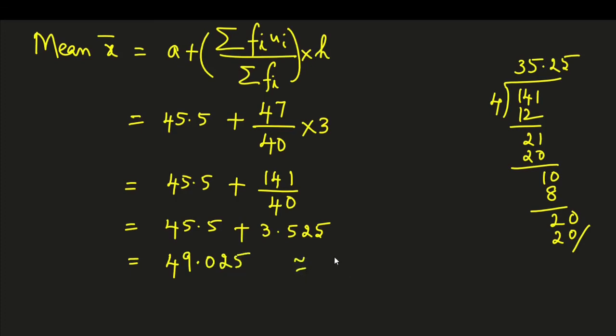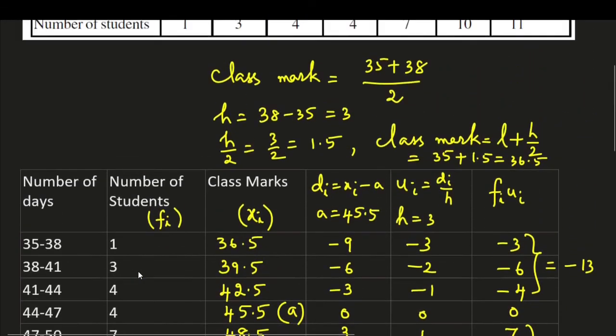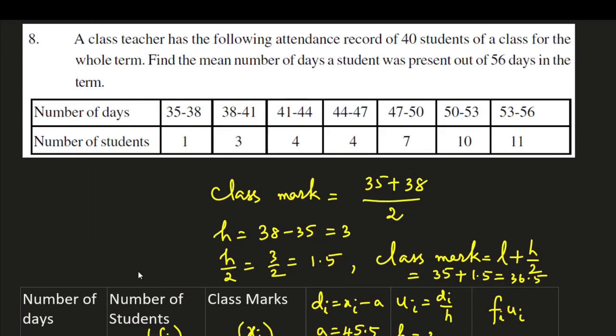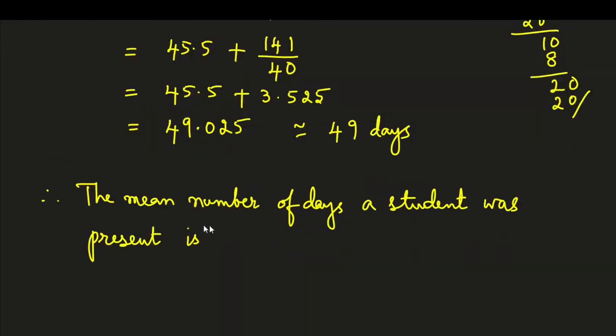So approximately 49. What is the question given? Mean number of days a student was present. The mean number of days a student was present is 49 days. Thank you. See you in next video.